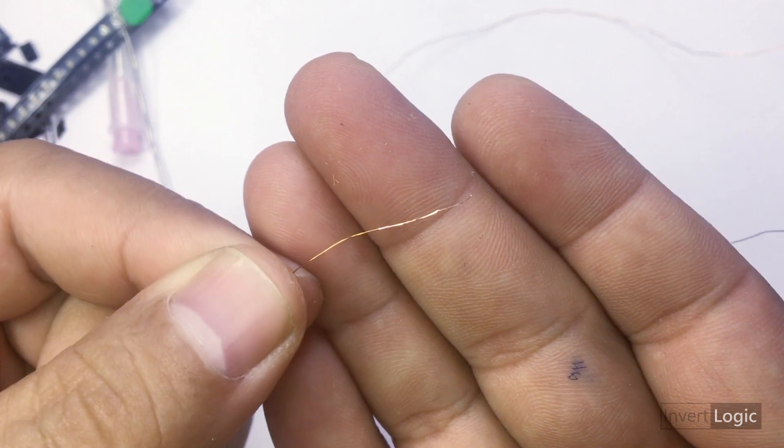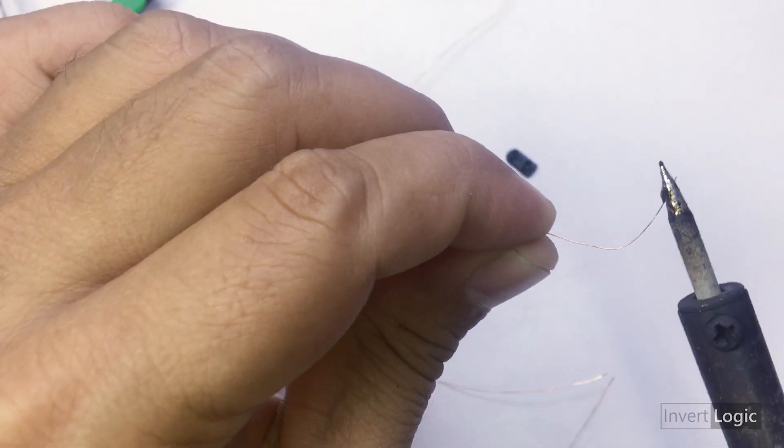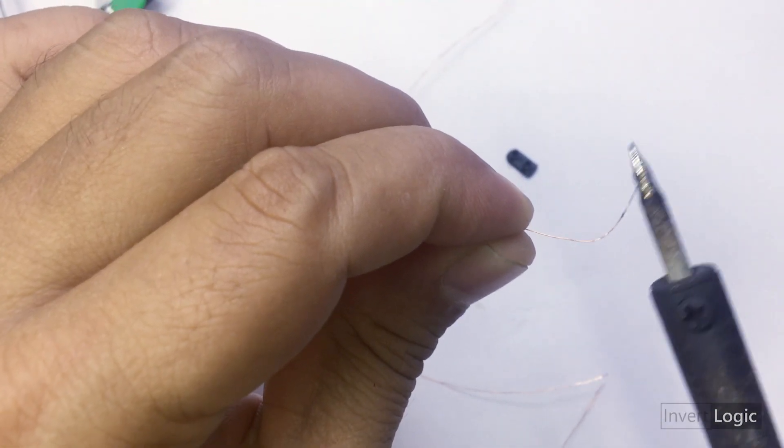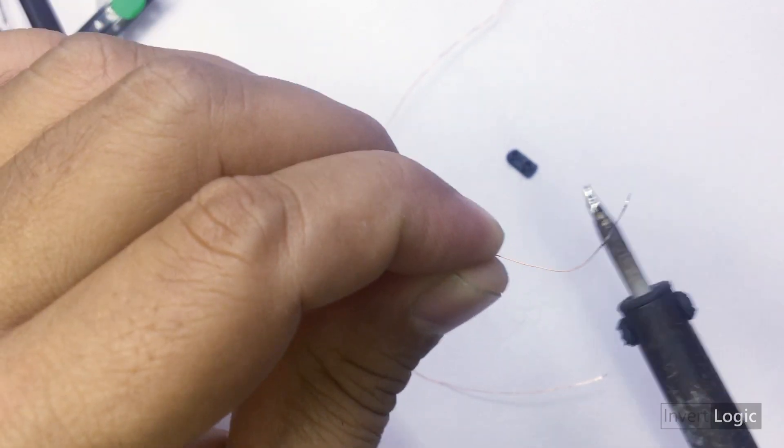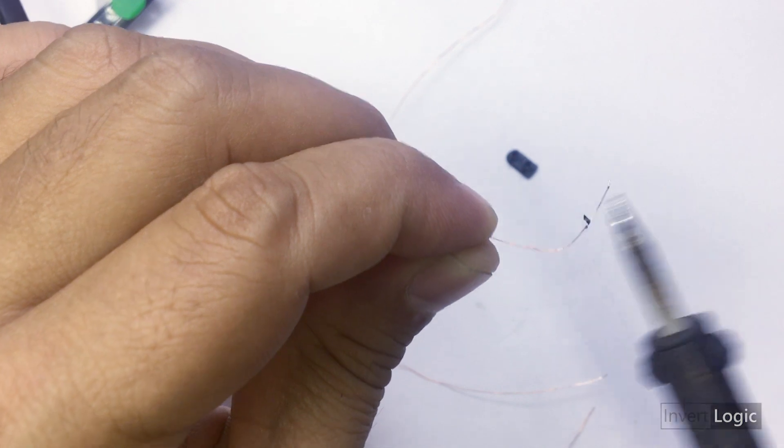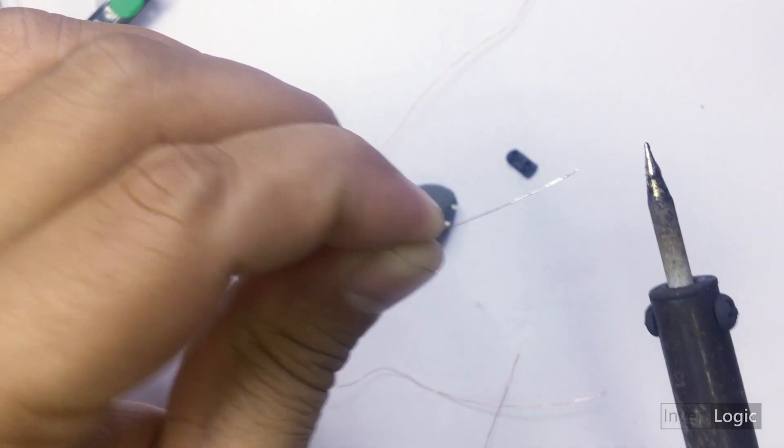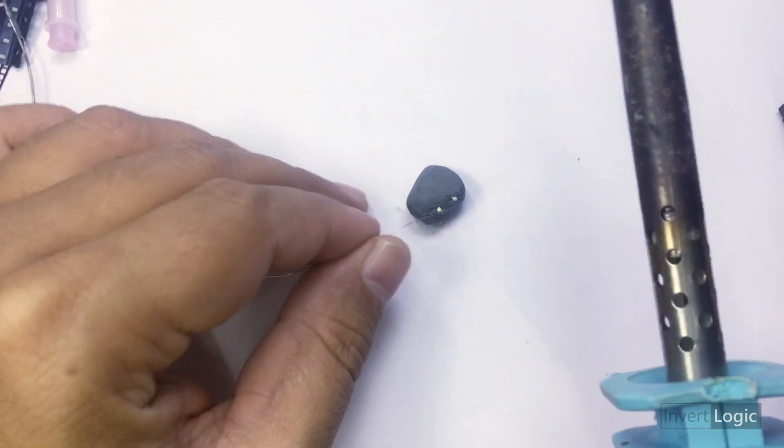Take some flux and try to tin the wire with your solder. Make sure it looks silver color. Once that's done, just put the wire on the ends of the SMD LEDs.